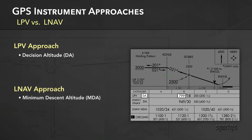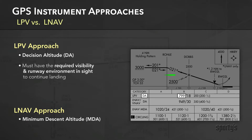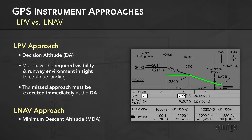This means that like with an ILS, when you reach the decision altitude listed on the chart while flying the glide path, you must have the required visibility and runway environment in sight to continue to landing. If the runway is not in sight at the decision altitude, you must execute the missed approach immediately.